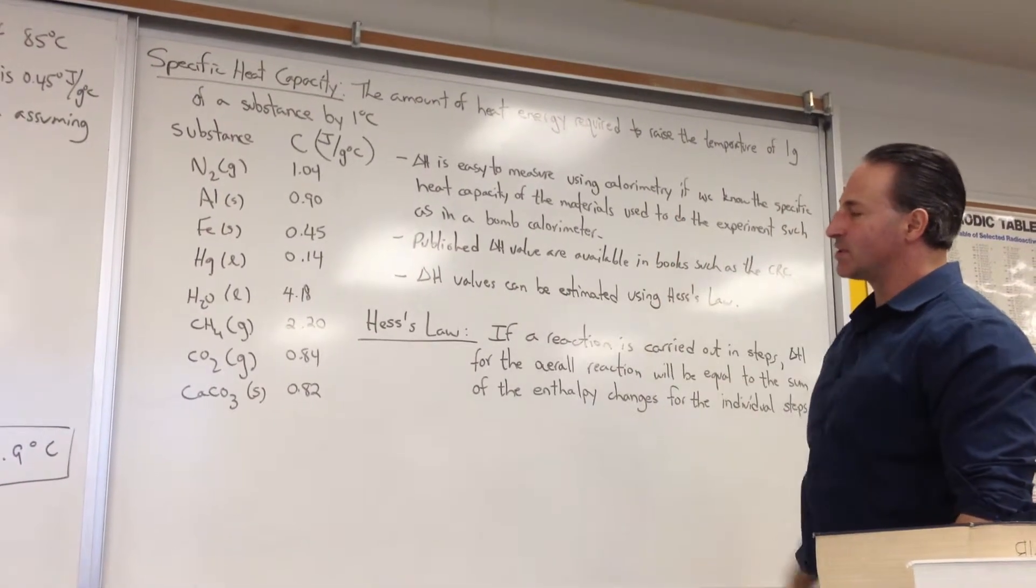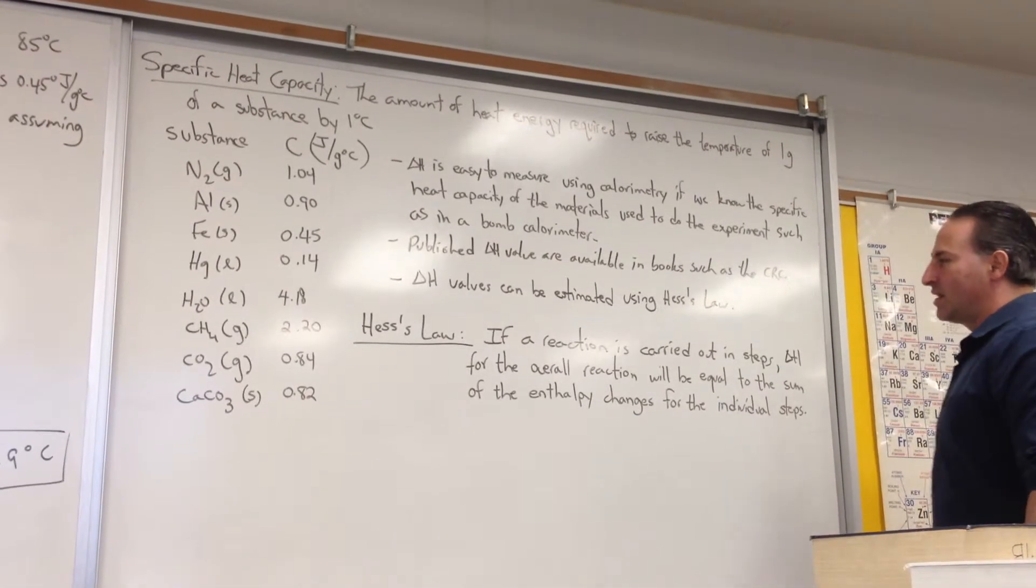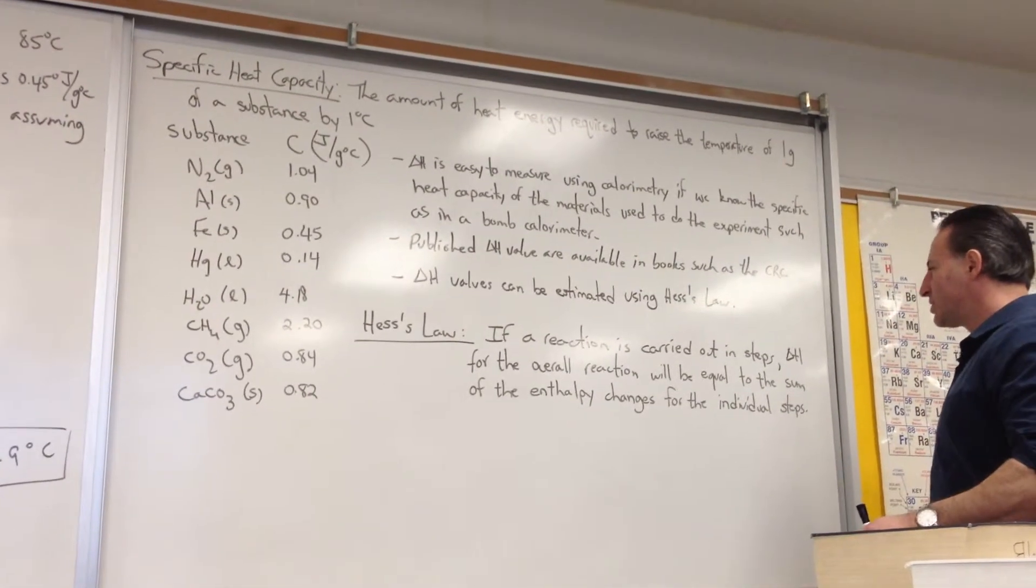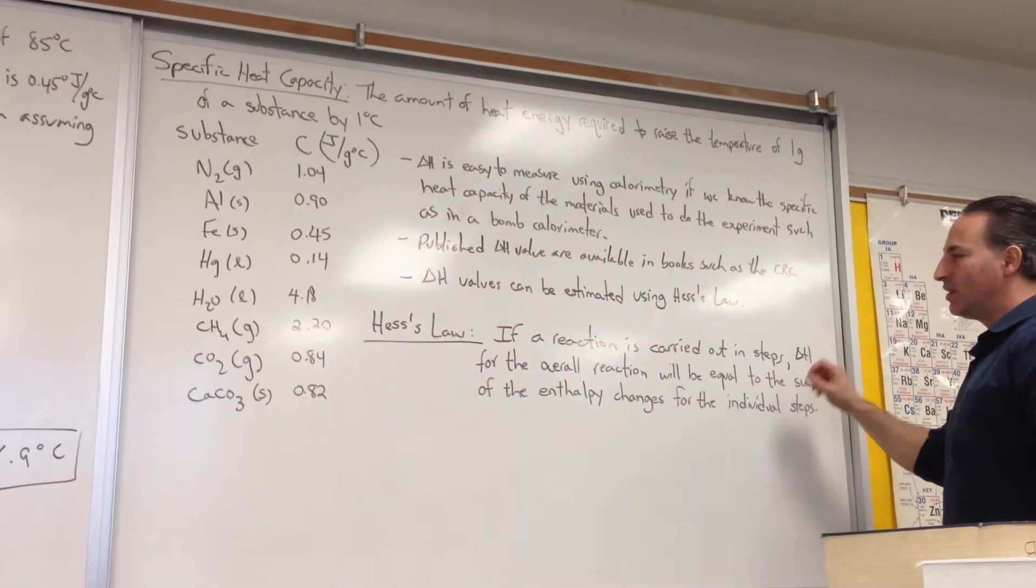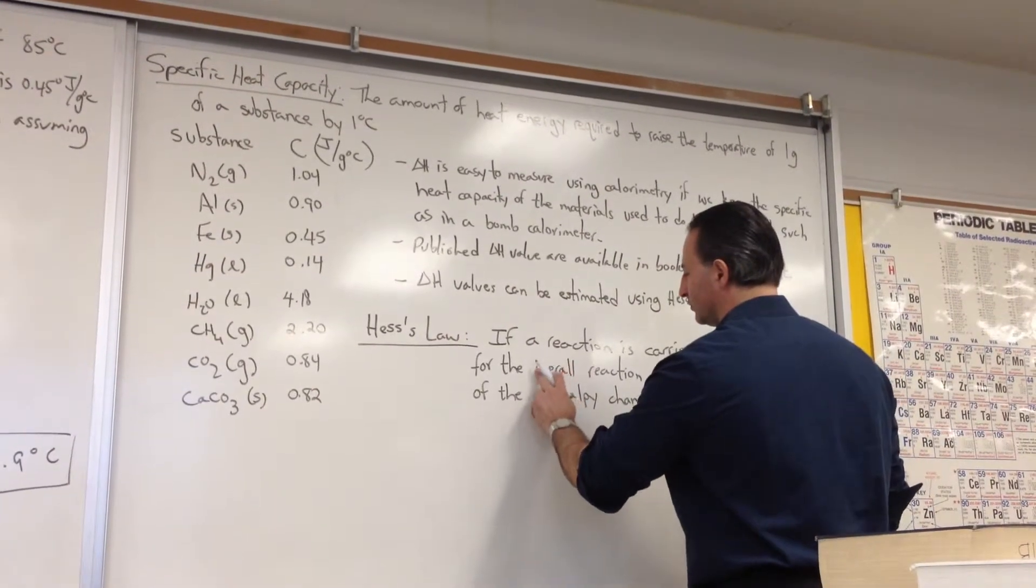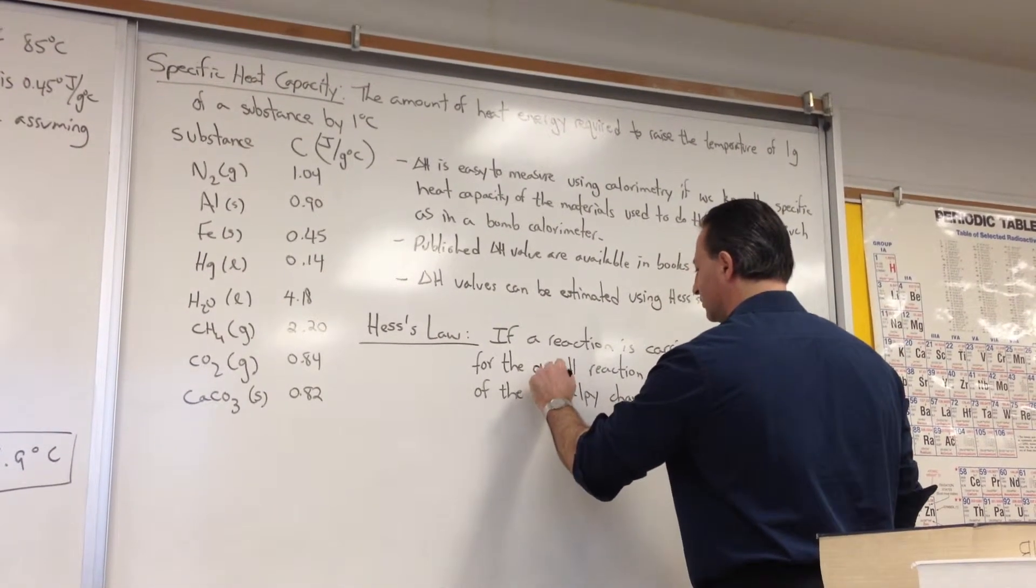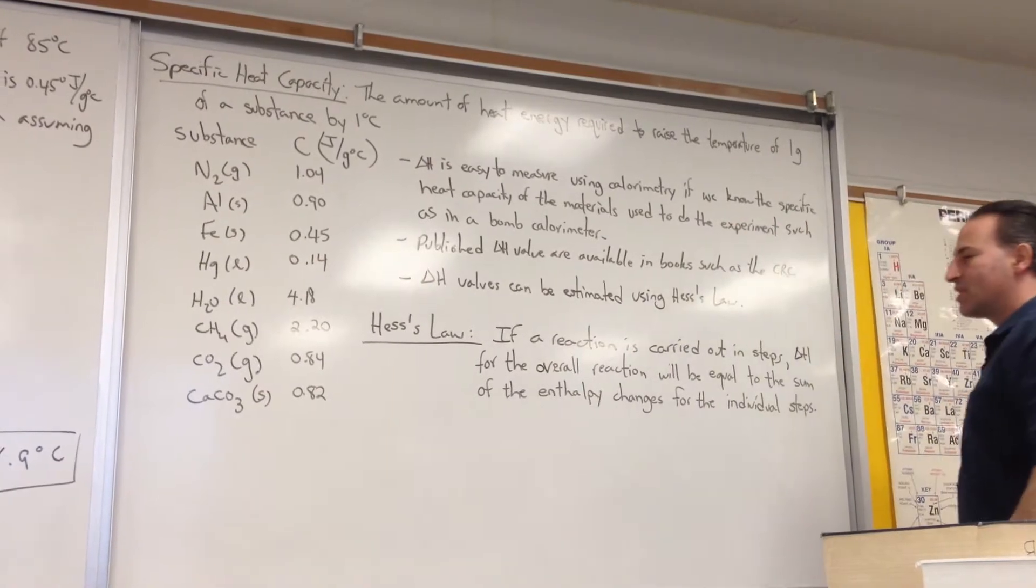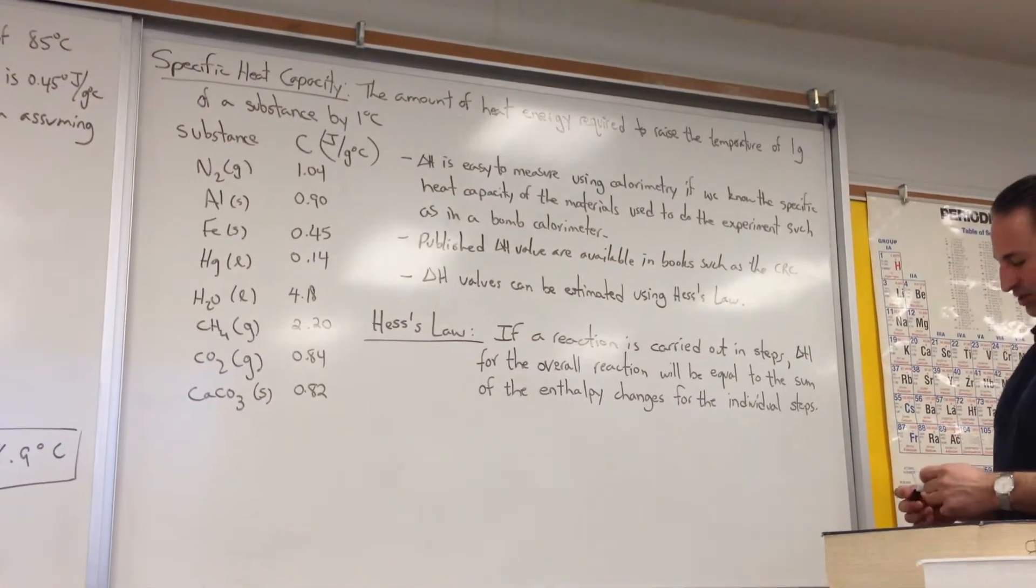And the delta H values can be estimated using Hess's law. Hess's law will be the next thing we discuss. Hess's law states that if a reaction is carried out in steps, the enthalpy for the overall reaction will be equal to the sum of the enthalpy changes for the individual steps.